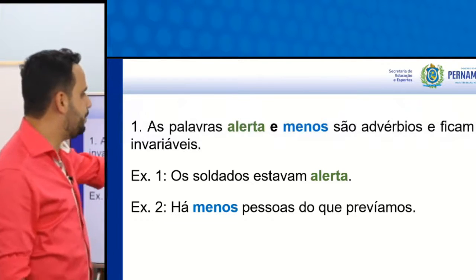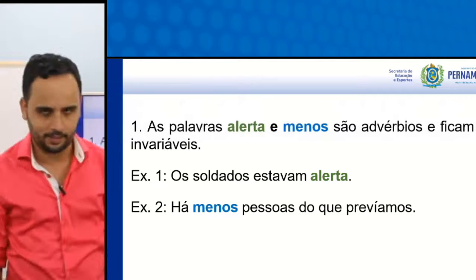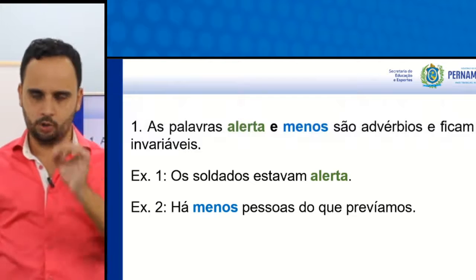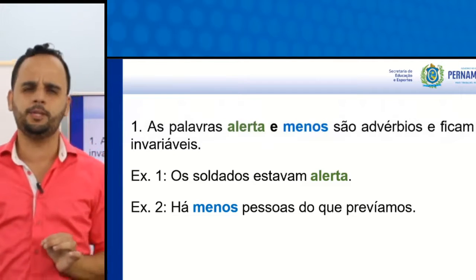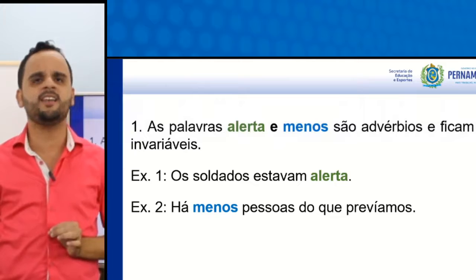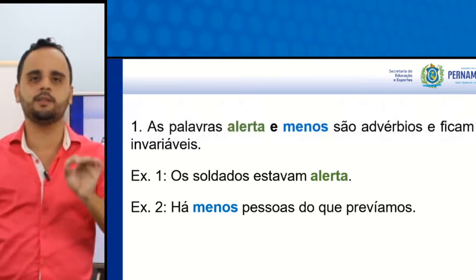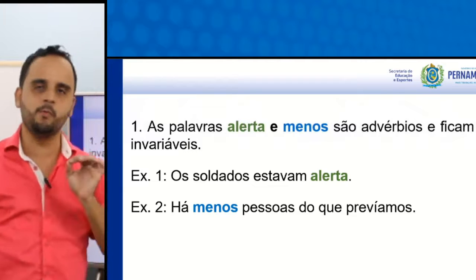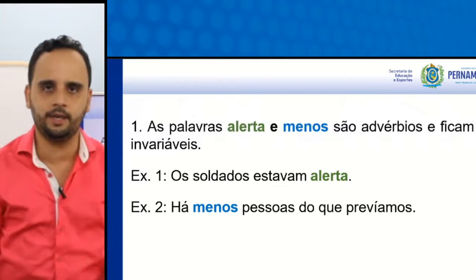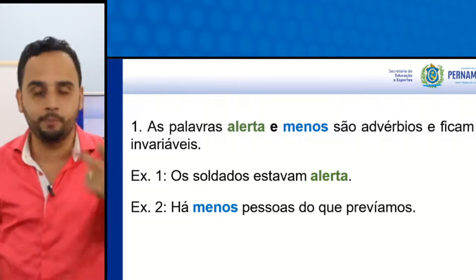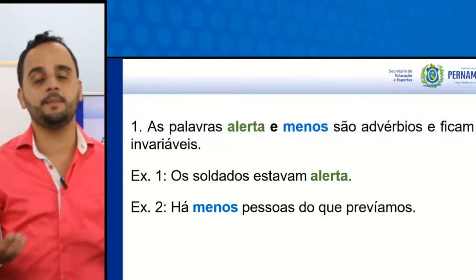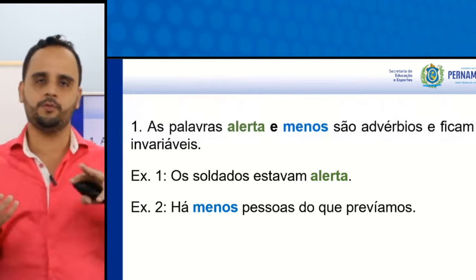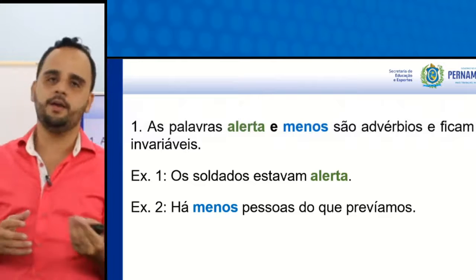As palavras 'alerta' e 'menos' são advérbios e ficam invariáveis. Se liga nisso. Olha o exemplo: os soldados estavam alerta. São soldados — é plural — mas: os soldados estavam alerta. É uma palavra invariável, é um advérbio. Advérbios, conjunções e preposições são classes gramaticais invariáveis. Ou seja, não vai pra masculino, não vai pra feminino, não vai pra singular, não vai pra plural.